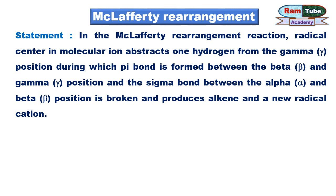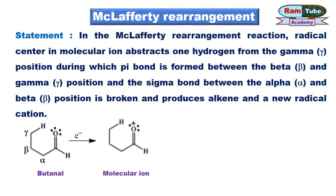Let's learn the McLafferty rearrangement with an example of butanal, which satisfies both criteria: it contains a gamma hydrogen and can generate a radical cation. When butanal is bombarded with high energy electrons, it generates a molecular ion which can be detected by the mass detector. At the same time, a few molecular ions undergo different fragmentation patterns, the most important one being the McLafferty rearrangement reaction.